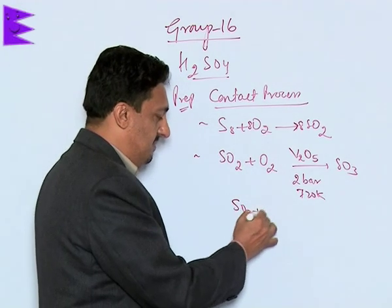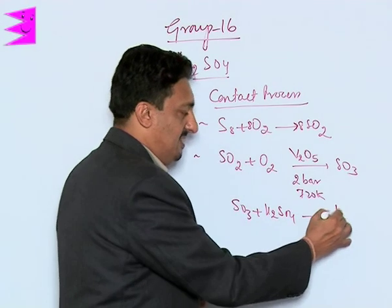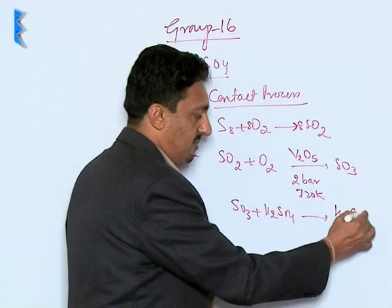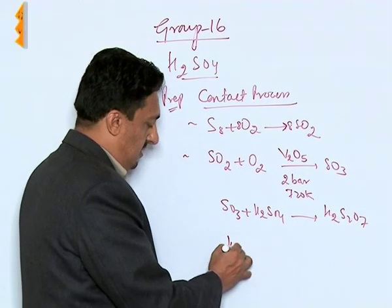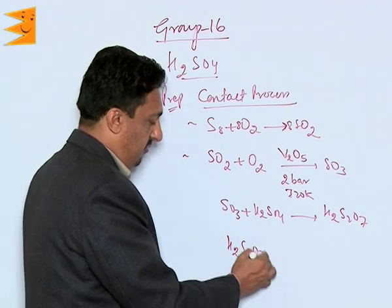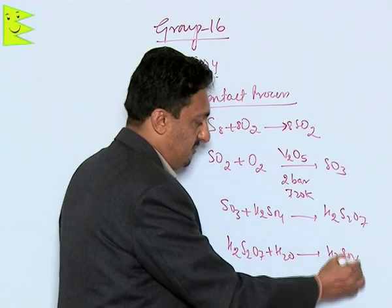This SO₃ is then passed through sulfuric acid which absorbs this and gets converted into oleum H₂S₂O₇. This oleum then on treatment with water forms H₂SO₄.